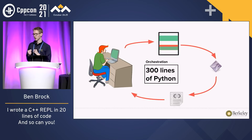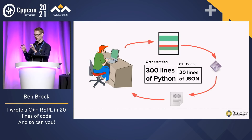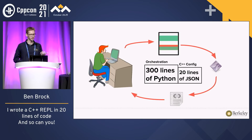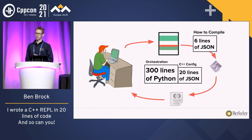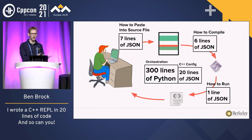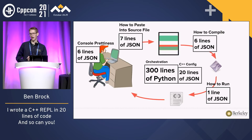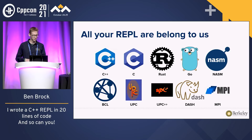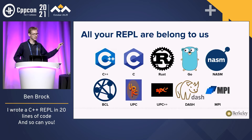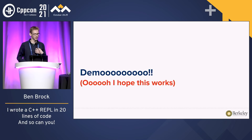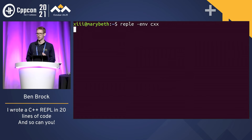I fibbed a little in the introduction — there are actually 300 lines of orchestration that make this whole loop work, and then 20 lines of JSON for configuration for a particular language. We can use this framework for a collection of different languages: six lines to describe how to compile your program, one line to describe how to run it, seven lines to describe how to paste your program into a file, and six lines for console prettiness. This makes it very modular — we can implement REPLs for a whole bunch of different languages and even distributed programming environments, all in around 20 lines of JSON.